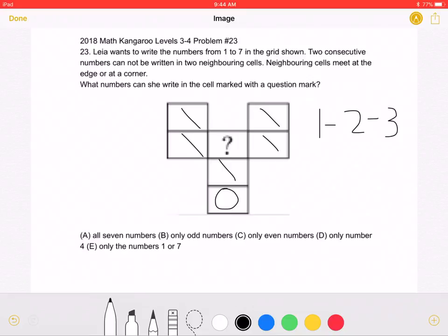And so on. Only the numbers 1 and 7 have only one neighbor. 1 only has 2 as a neighbor. And 7 only has 6 as a neighbor.